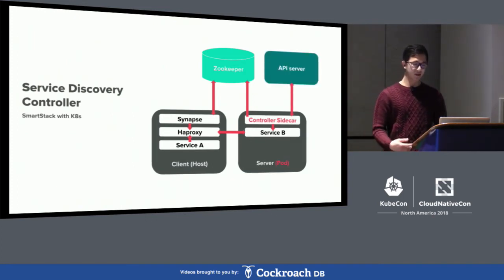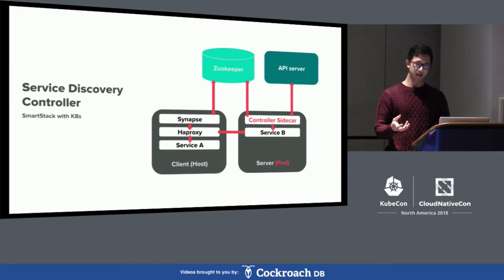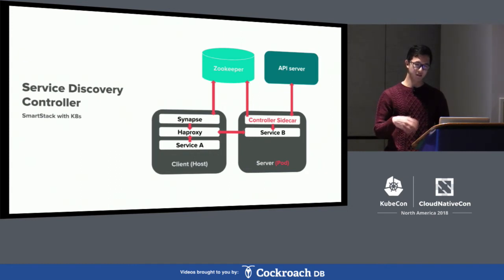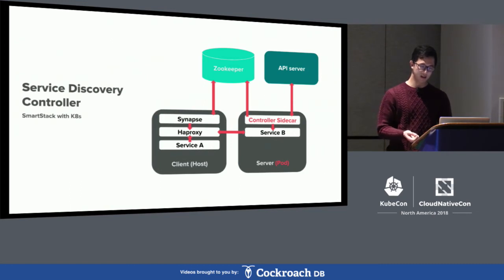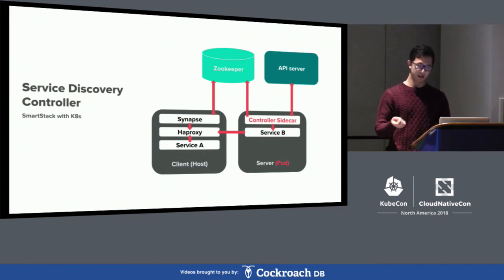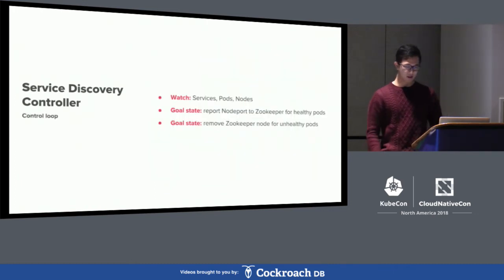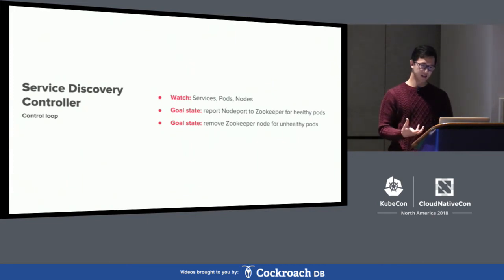Inside Kubernetes, we need a few more pieces of information which we get from the API server. We implement this as a controller sidecar within each pod, reading the node-port service information. Previously in SmartStack, ports were relatively statically allocated, but in Kubernetes when you create a node-port service that port is randomly allocated, so you need to fetch that information — as well as the current host the pod is running on. The controller sidecar has replaced the role of Nerve: it still does health checks to determine the readiness of the serving pod and adds or removes it from ZooKeeper accordingly. The objects this controller watches are services, pods, and nodes.